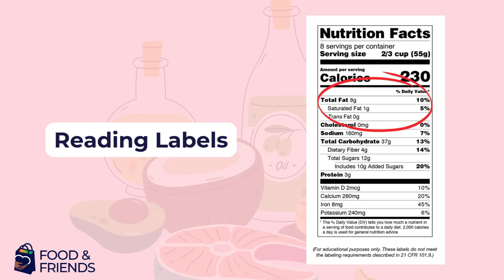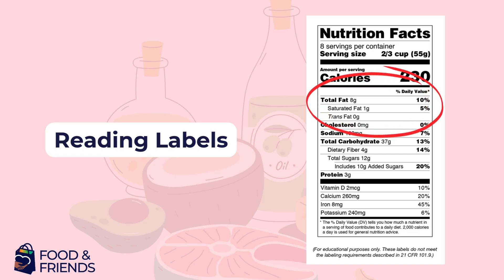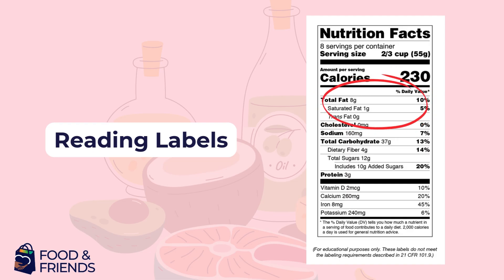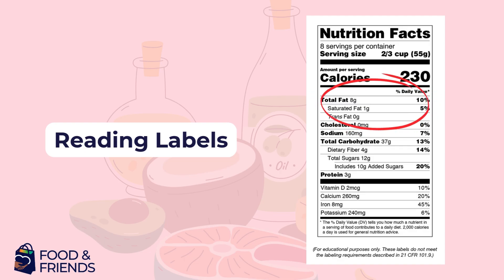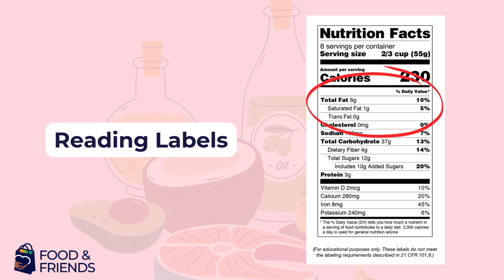One way to get more familiar with the types of fat in your food is to read the Nutrition Facts label on food packaging. You can see an example here, with fat listed under the calories. Not only can you see the total amount of fat in a serving of the product, but you can read the amount of saturated fat present, if there is any. Remember that the information on the label is based on the serving size listed, which does not always reflect the total amount in the package or the amount you are eating. If you are not sure about the serving size as compared to what you eat, schedule a call with your dietitian at Food and Friends.